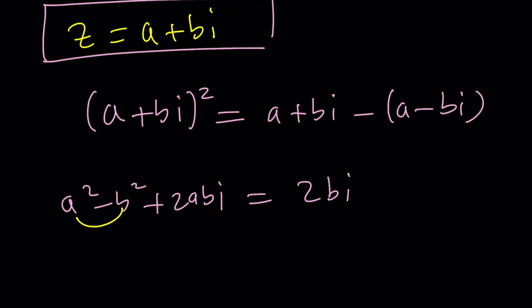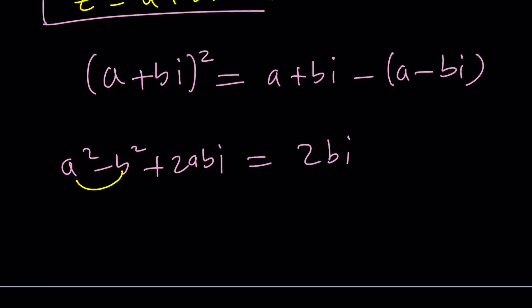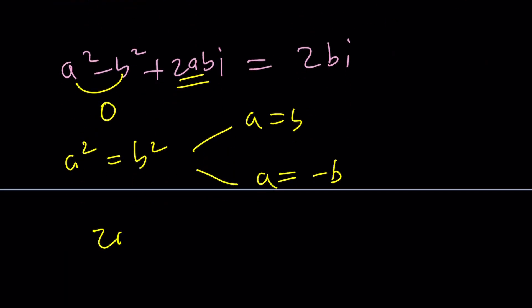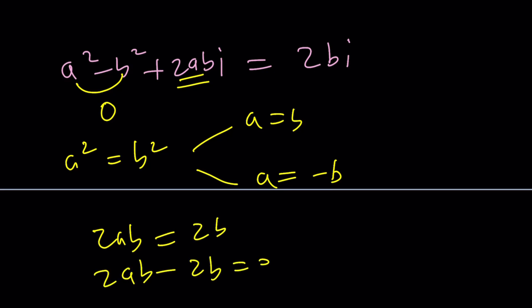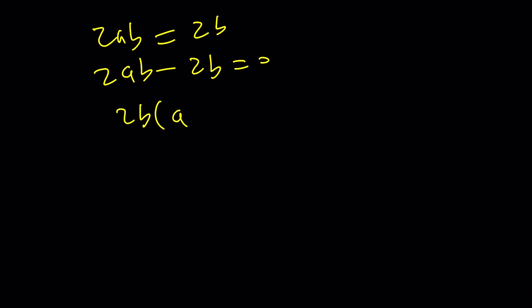So from here, we get the following. We get a squared minus b squared equals 0 because there's no real part on the right-hand side. a squared equals b squared, which implies a is b or a is negative b. And the second part gives us 2ab equals 2b. So put everything on the same side and factor. You're going to get 2b outside and then a minus 1. And this is going to give me b equals 0 or a equals 1.